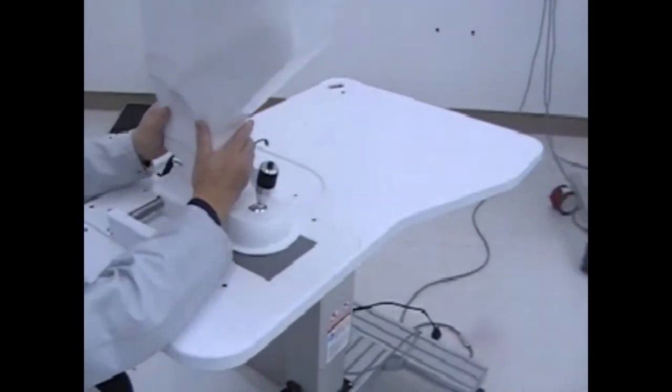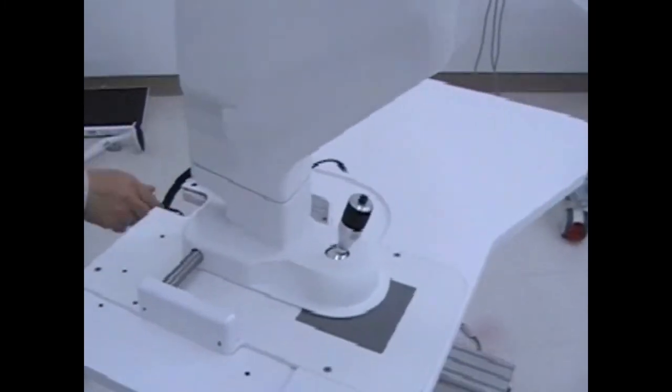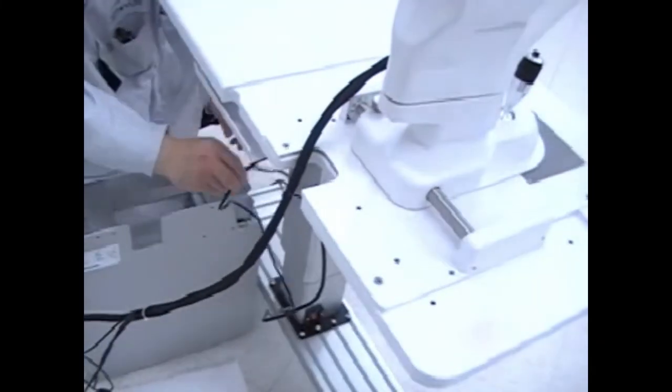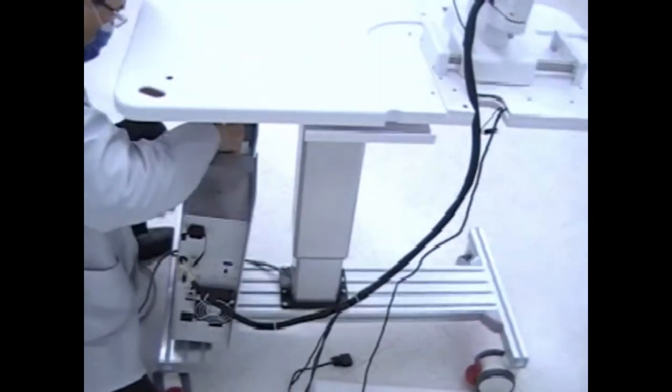Make sure that the head is all the way down to the joystick assembly, then take the control box. Be careful because it's heavy. Position it under the table, lift it up, and slide it onto the hooks.